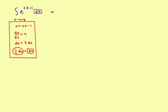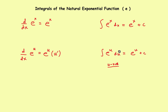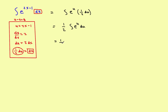Substituting, the integral becomes the integral of e to the u times one-half du. Bringing the constant one-half outside the integral gives one-half times the integral of e to the u du. Using the formula, the antiderivative of e to the u is e to the u plus c. So the result is one-half times e to the u plus c. Replacing u with 2x minus 1 gives the final answer: one-half e to the 2x minus 1 plus c.